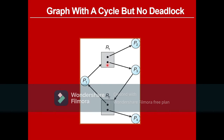P3 can complete its job — it already has one instance of R1 and will take the instance released by P4, then do its work. So both P3 and P4 will be free, and their resource instances will be freed. Now P1 can use an instance of R1, since it is already holding one instance of R2, it can complete its work and become free. P2 will also complete its work and be free. There is no deadlock.